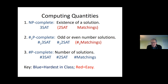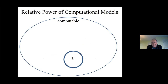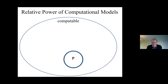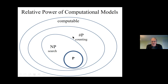To give a diagram: the various models of computability are defined by Turing. The class P consists of problems where you can find solutions in polynomial time. NP is where you're searching for a solution; Sharp-P is where you're counting the number of solutions. Finding a solution is always no harder than counting, because if you know the number you know whether it's zero or non-zero.